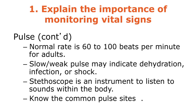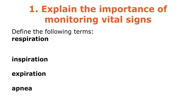The normal pulse rate for adults is between 60 to 100 beats per minute. A slow, weak pulse may indicate dehydration, a possible infection, or even shock. A stethoscope is also an instrument used to listen to pulse rhythm and detect any abnormal rhythms. Common pulse sites include the brachial, radial, carotid on the neck, and pedal on the foot.